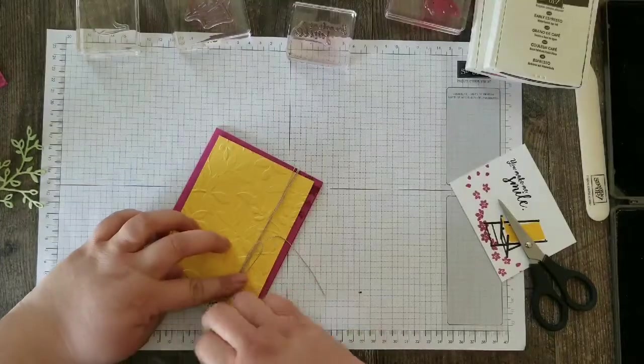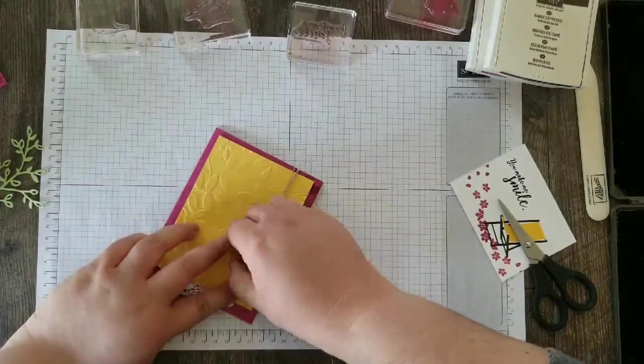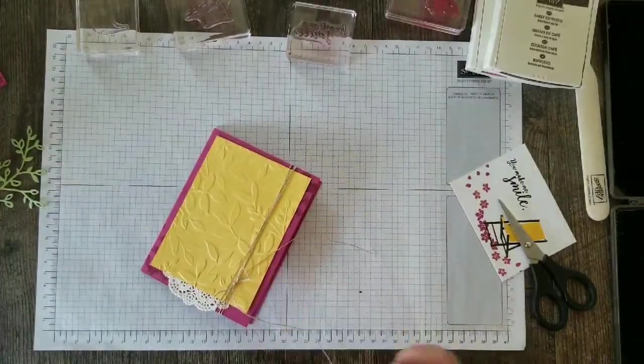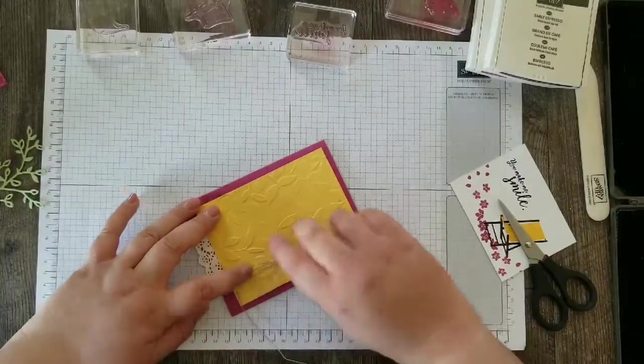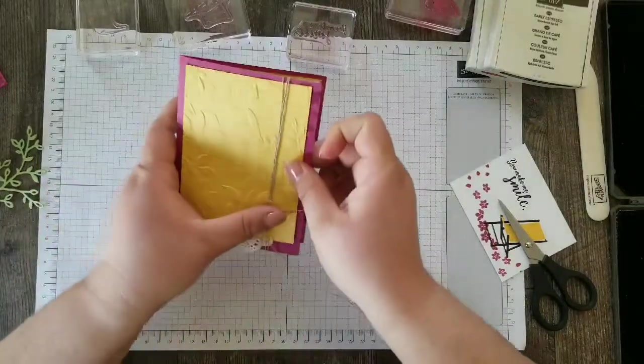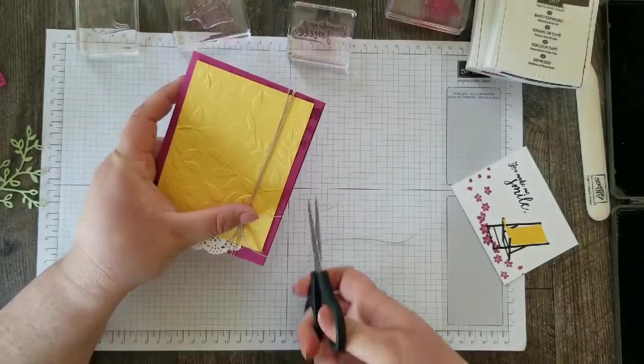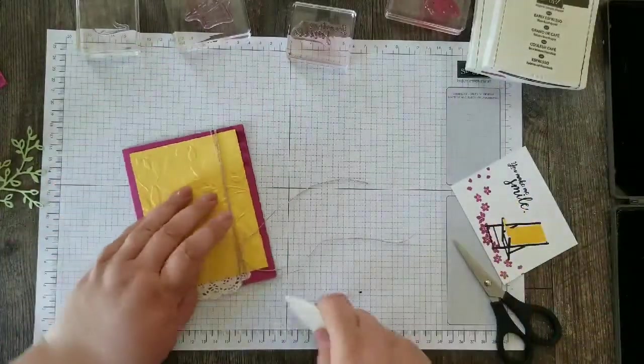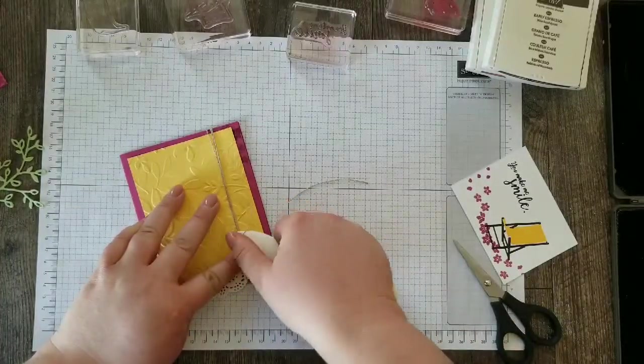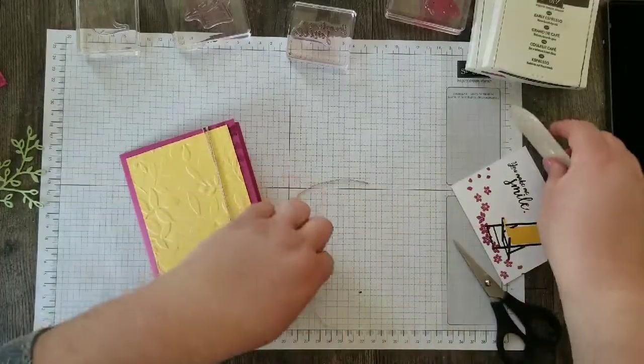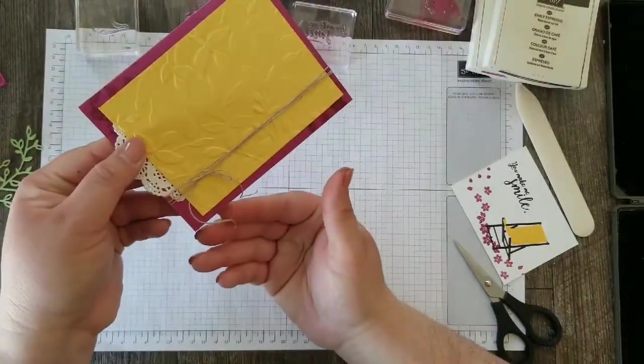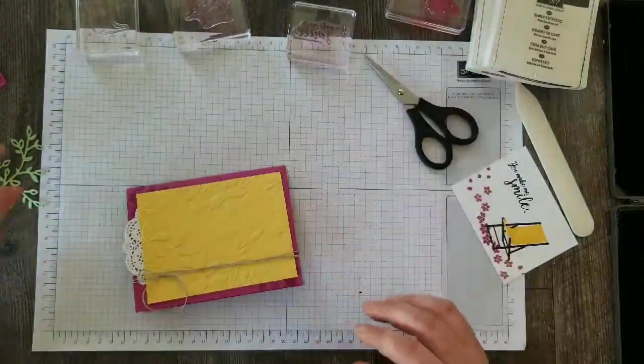And then you just tug on the ends until you get the bow the size that you want it. I can hear my dogs outside. I'm going to close my window here. And then a little tip for you. You can curl the ends of your linen thread by using your bone folder. So just like you would curl ribbon, I come in here and kind of make it real taut against the bone folder, slide it through, and it curls the ends of that a little bit. It looks pretty cool.